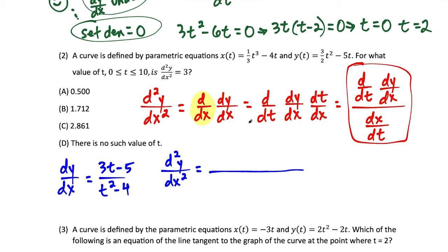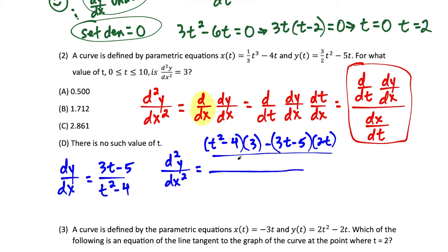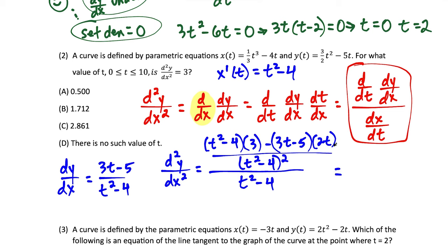We do have a calculator for this question. I'll show both methods. Simplifying, the denominator becomes (t squared minus 4) to the third power. On the calculator, I press alpha y-equals enter to pull up a blank fraction, type in the second derivative expression using x instead of t, then set y2 equal to 3. I set the window from x minimum 0 to x maximum 10, then press graph.